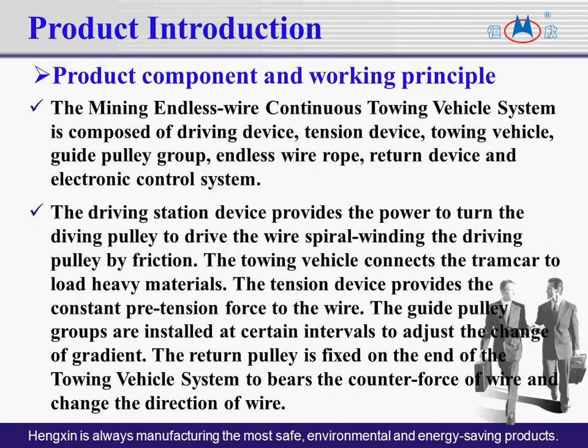The mining endless wire continuous towing vehicle system is composed of a driving device, tension device, towing vehicle, guide pulley group, endless wire rope, return device, and electronic control system. The driving station provides power to turn the driving pulley, driving the wire by spiral winding via friction. The towing vehicle connects the tram car to load heavy materials. The tension device provides constant pre-tension force to the wire. Guide pulley groups are installed at intervals to adjust gradient changes. The return pulley is fixed at the end of the system to bear the counter force and change the direction of the wire.